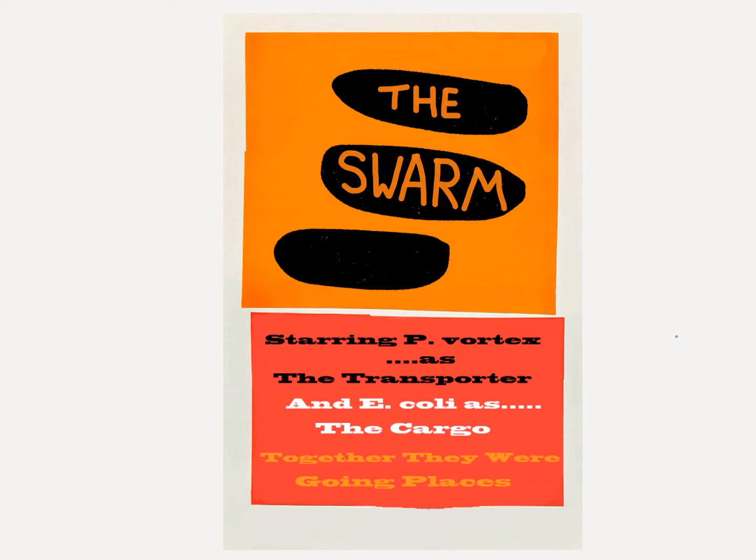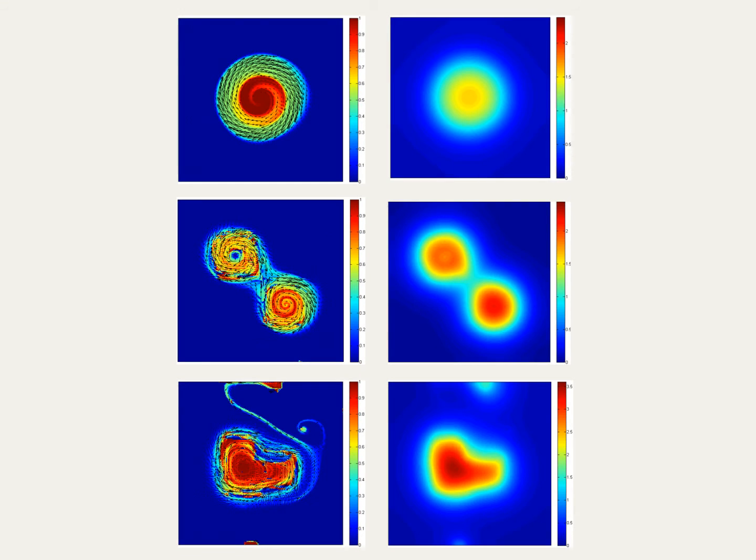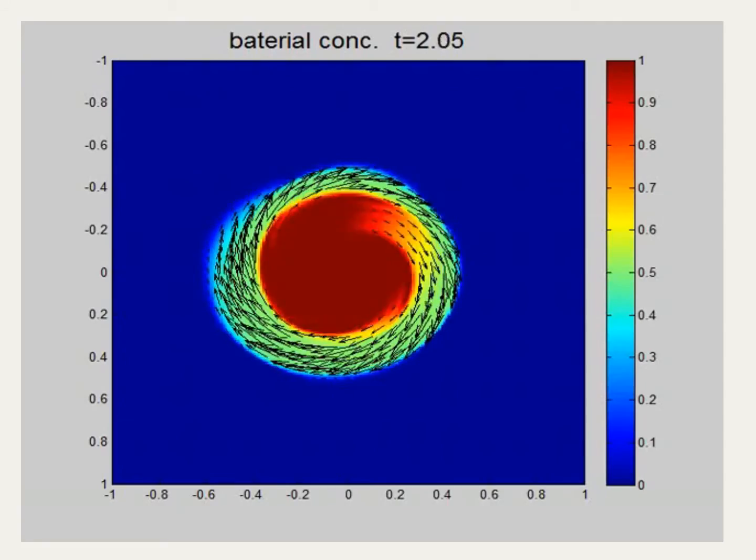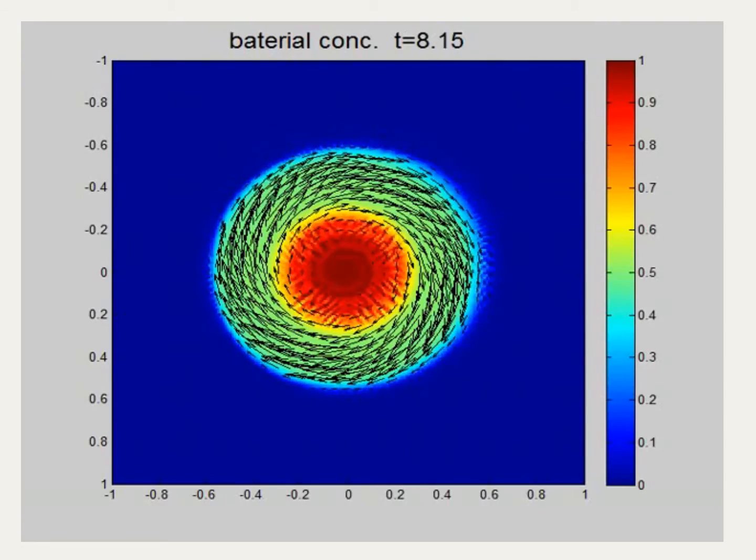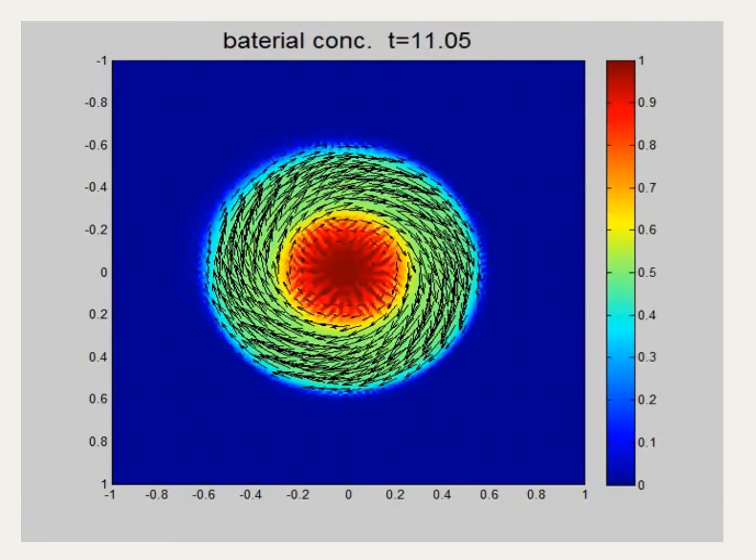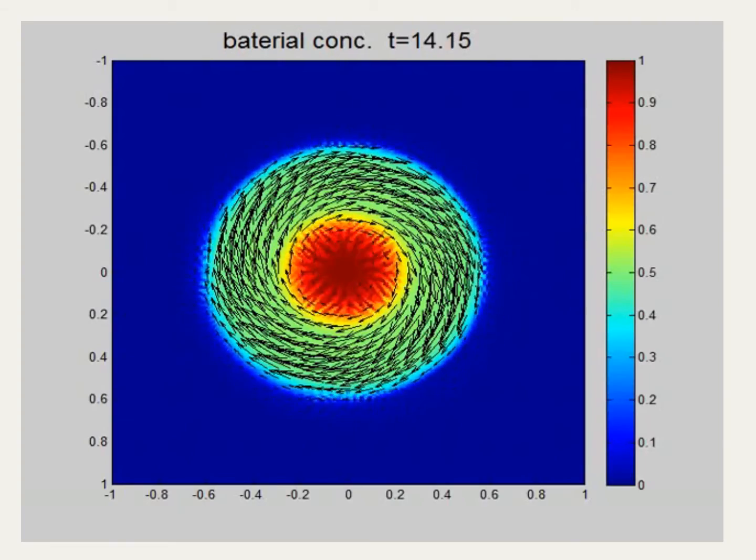So how do you study this kind of thing? Well there's lots of ways but one way is to make movies of the combination of swarming bacteria with their cargo and then use those movies and the information that you have from other experiments to make simulations of how P. Vortex swarms and how it carries cargo organisms. This is an example of a simulation. In this case we're just looking at P. Vortex alone and we're looking at how the rotating colony holds together and moves.